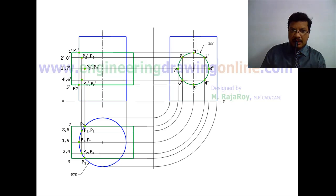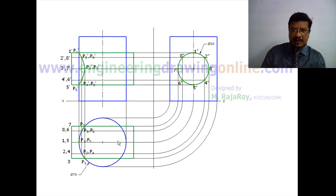Now join all these points with a smooth curve. This curve is the curve of intersection between these two cylinders. To obtain the right hand side part, follow the same procedure as shown here, drawing the projectors so you can obtain the right hand side part of the curve of intersection of these two cylinders.